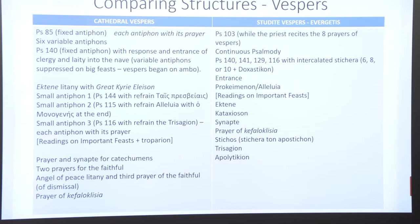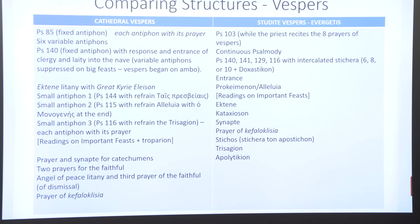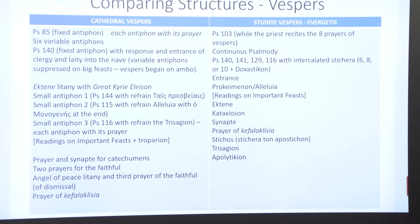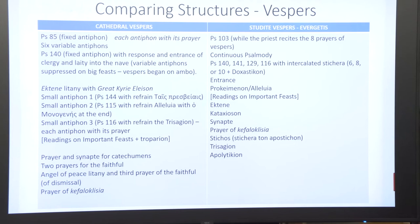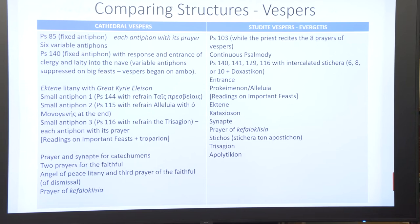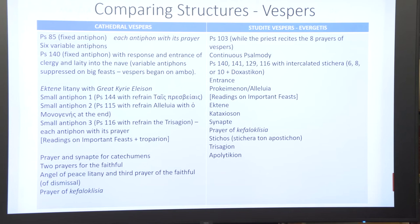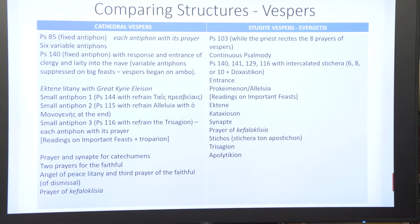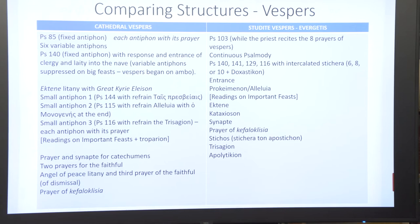Looking at the structures and using the Cathedral Vespers as seen in the Typikon of the Great Church together with the Barberini Codex, alongside Studite Vespers as in the Evergetis Typikon, we can see they have fundamentally very different structures — which you can also see by comparing your handouts. To highlight a couple of things: the opening psalm in the Cathedral office is Psalm 85. The opening psalm in Studite Vespers is Psalm 103. Both have Psalm 140 as the central vesperal psalm, which is a classic vesperal psalm of the Christian tradition, but it functions in very different ways.